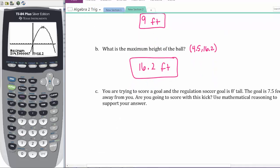The last question: You're trying to score a goal, and the regulation soccer goal is 8 feet tall. The goal is 7.5 feet away from you. Here's my goal, 8 feet tall, 7.5 feet away. Are you going to score with this kick? Use mathematical reasoning to support your answer. I need to figure out if when I kick the ball, is it going to make it in the goal? Is it going to come short, or am I going to kick it over the top? The goal is 7.5 feet away. So what happens when x is 7.5 feet?